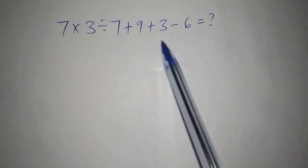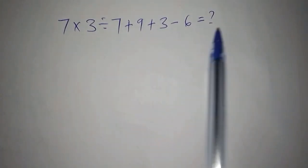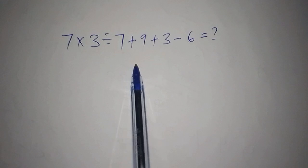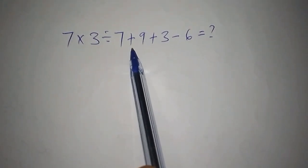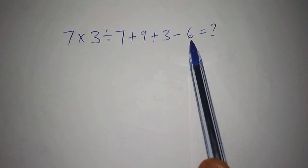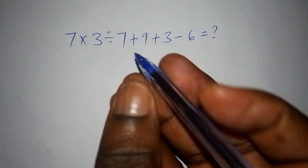Hello, do you know how to work out order of operations or combined operations? You're welcome. So we have 7 multiply by 3 divided by 7 plus 9 plus 3 subtract 6. What's the answer? So we're going to start with the solution.